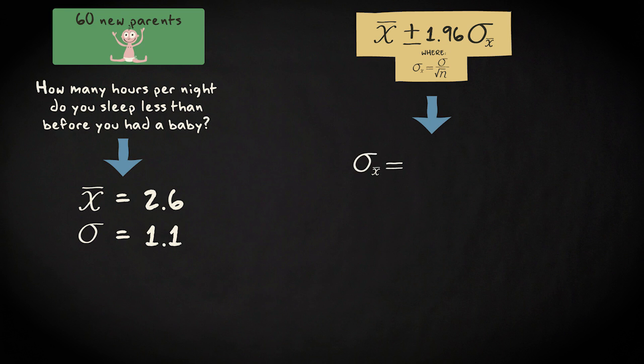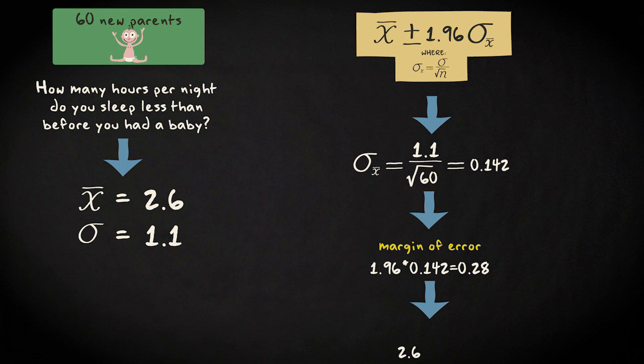Let's first compute sigma x-bar. That's 1.1 divided by the square root of 60. That makes 0.142. Now we compute the margin of error. That's 1.96 times 0.142. That's about 0.28. The sample mean equals 2.6. So the 95% confidence interval is the interval between 2.6 minus 0.28 and 2.6 plus 0.28, which is the interval between 2.32 and 2.88.